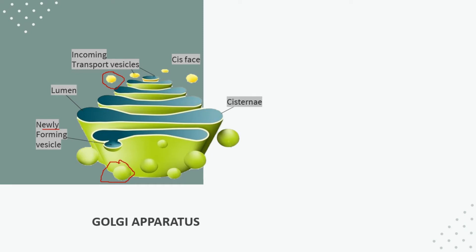The Golgi complex was discovered in 1898. When the cell was observed and examined, the Golgi apparatus was first seen. The Golgi apparatus is present in all eukaryotic cells.